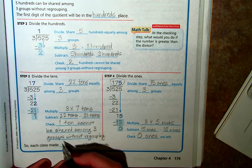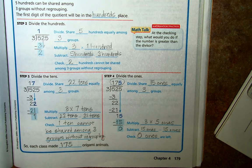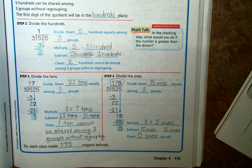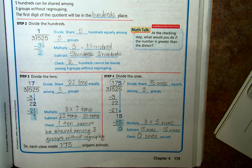So each class made 175 origami animals. So this is what page 179 should look like. Good job. Talk to you later, guys.